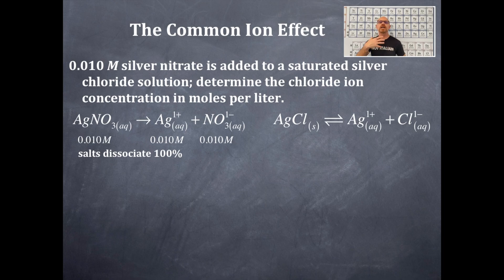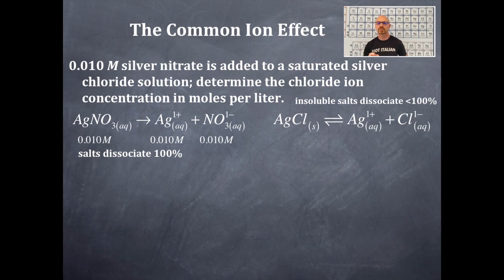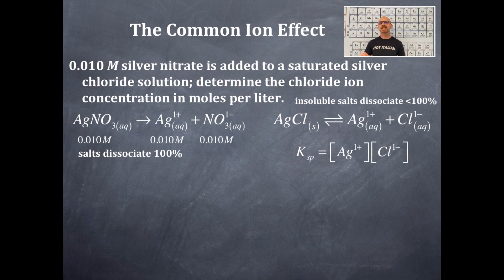Since silver chloride is an insoluble precipitate, we write a Ksp for it. The Ksp expression is products over reactants with stoichiometric coefficients as exponents. Solids and liquids are not included in any K expression — only aqueous species are. Therefore there is no denominator here. The Ksp expression for AgCl is simply Ksp = [Ag⁺][Cl⁻], both with coefficients of one — very straightforward.